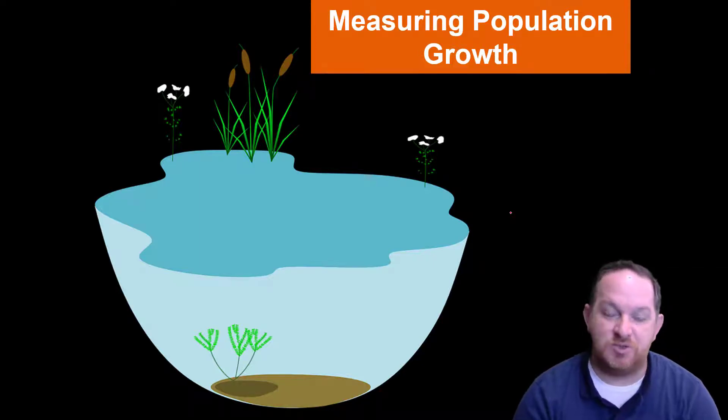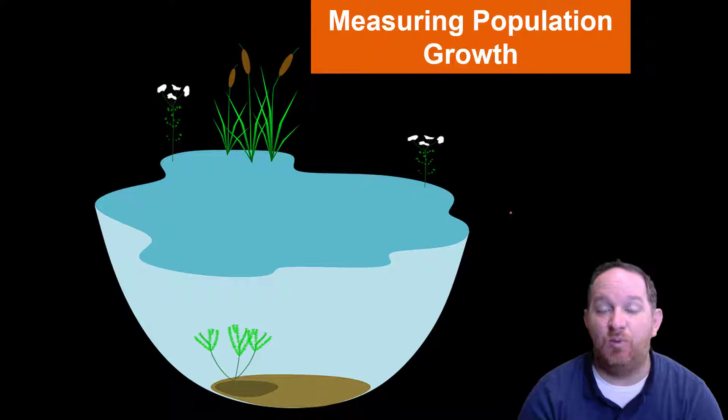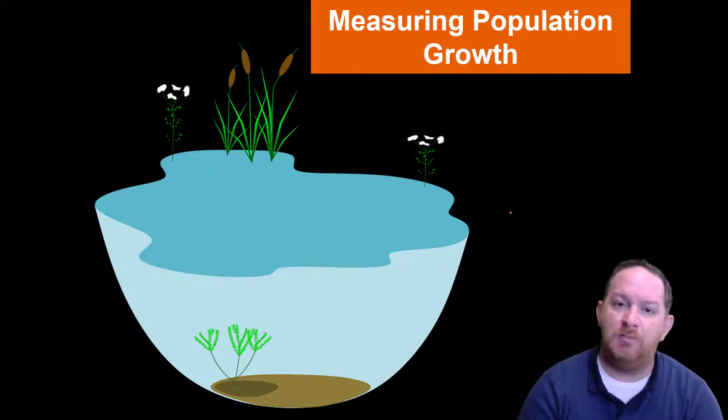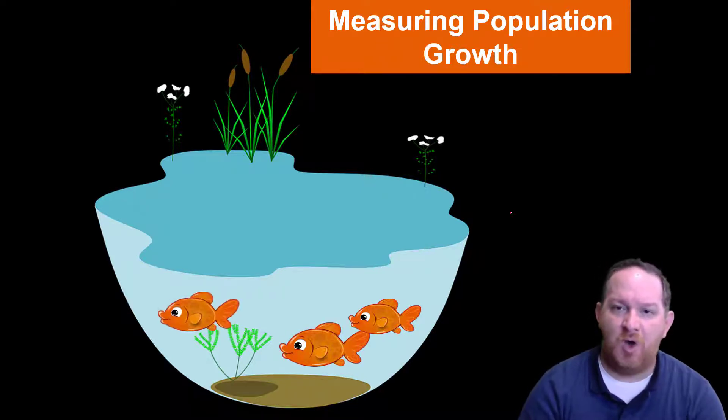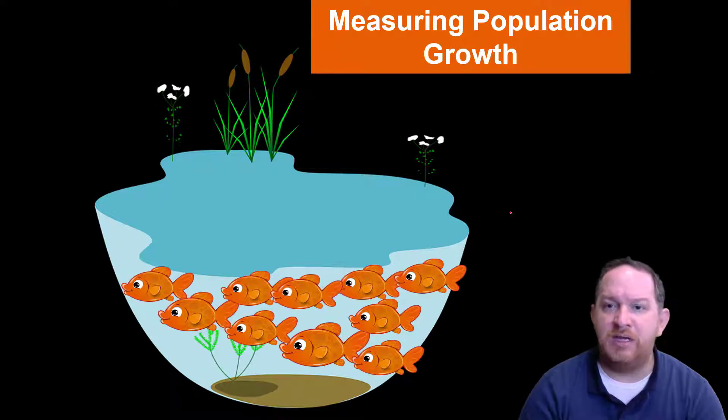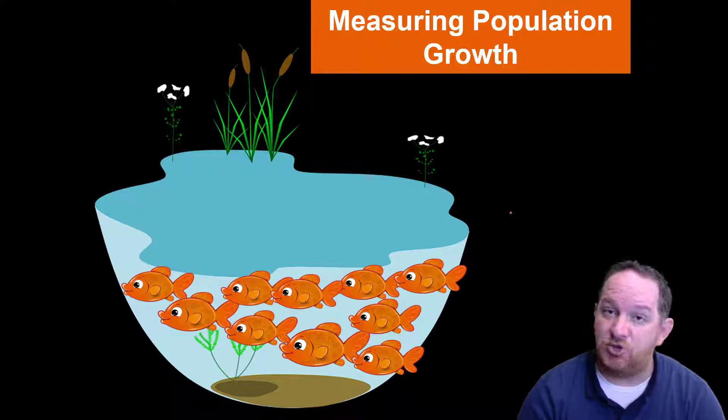If you ever go to a pet store and decide you want to get some goldfish or a few different pets, there's often a limit on how many fish or how many pets they say you could put in a certain container. Maybe you've thought about this - I wonder how many goldfish I can put in this aquarium, or maybe you're looking at a lake or a pond and you've thought, I wonder how many fish could possibly be sustained in that pond. In this video we're going to attempt to talk to you about how we could measure population growth and define the limits or the carrying capacity of certain environments.